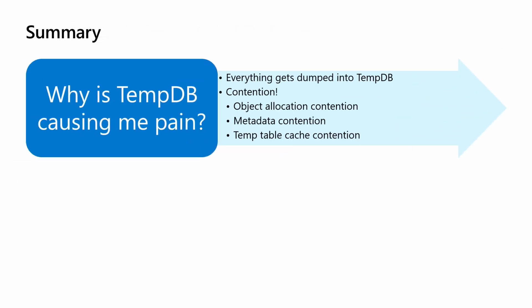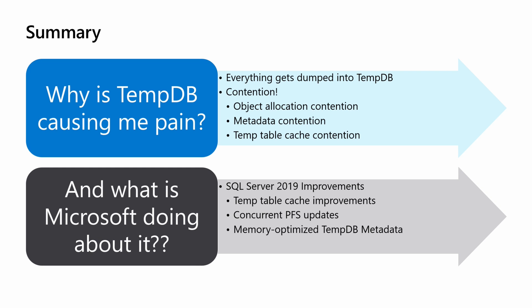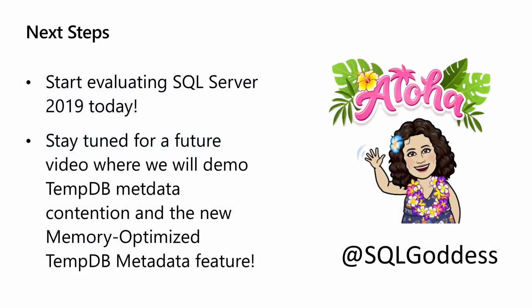To summarize: why is TempDB causing you pain? It's used for everything in your server, so even if you're not using temp tables, you've got a lot of TempDB access. We've got three different types of contention, especially in larger servers with highly concurrent applications. In SQL Server 2019, we are introducing temp table caching improvements, concurrent PFS updates, and memory optimized TempDB metadata to help improve TempDB scalability. Start evaluating SQL Server 2019 today to see if you can improve performance of your TempDB-heavy workloads. Stay tuned for a future video where we'll demo these contention issues, how to detect them, and how to turn on and use the new memory optimized TempDB metadata feature. Thanks very much.